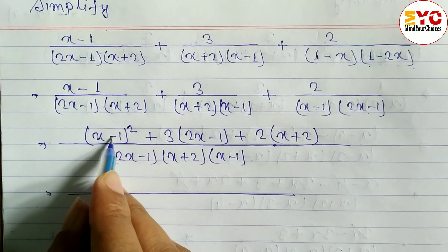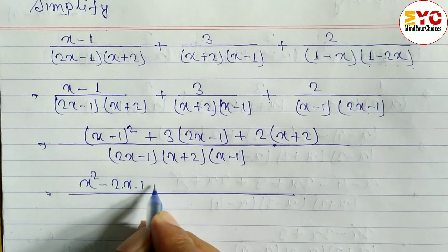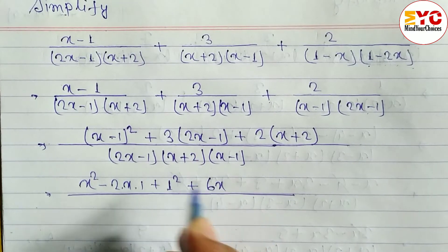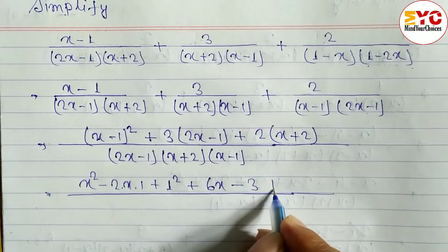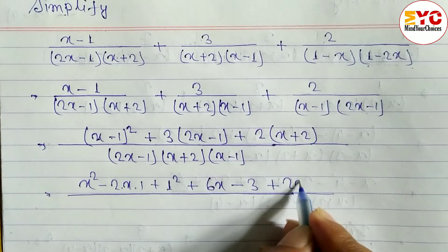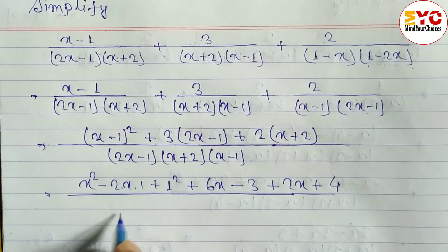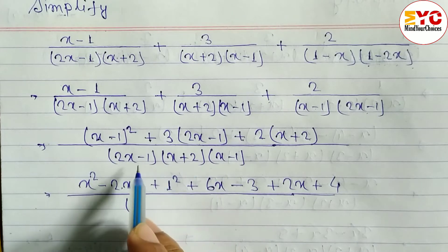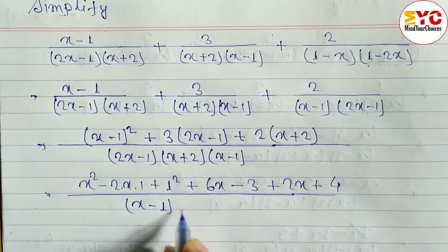For (x minus 1) squared, we use the formula a squared minus 2ab plus b squared, giving x squared minus 2x plus 1. Then plus 3(2x minus 1) gives 6x minus 3. Then plus 2(x plus 2) gives 2x plus 4. The denominator is (x minus 1)(x plus 2)(2x minus 1). You can also leave the answer in factored bracket form.